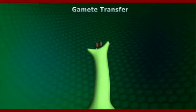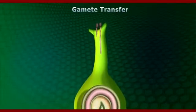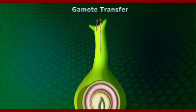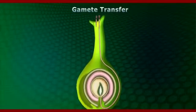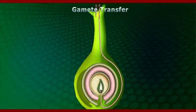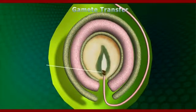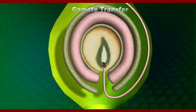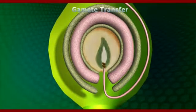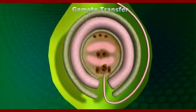Male pollen grains reach the stigma and germinate, forming the pollen tube. The pollen tube contains male gametes and grows inside the style, reaching into the ovule where it fertilizes the female gamete.